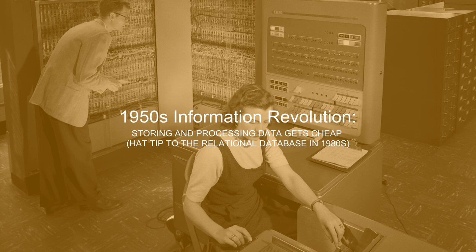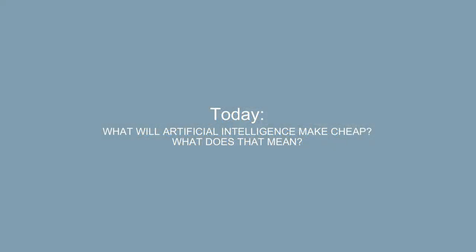I think AI is going to be like that as well — it's going to get into every important piece of software. One way to think about relational databases is they made it very cheap to store and sort and count information. AI will do the same thing — it will make a class of things cheap. What AI makes cheap is very different than what the relational database made cheap, and it's going to become ubiquitous across all categories of software.